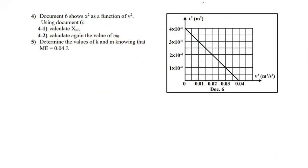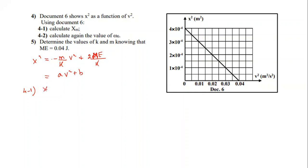Document 6 shows X² as a function of V². Using the graph, XM² equals 4 × 10⁻⁴ m², which means XM = 2 × 10⁻² m, equal to 2 centimeters.